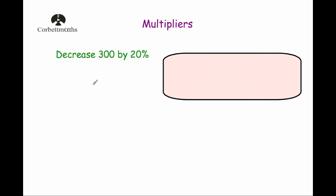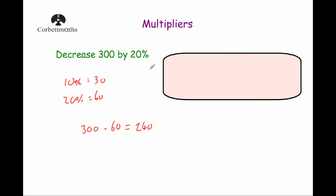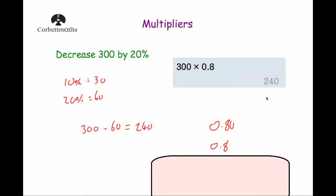Now we're going to look at decreasing by a percentage using a multiplier. Our question says decrease 300 by 20%. Using the standard method: 10% is 30, so 20% is 60, and 300 take away 60 equals 240. But with a multiplier — if we have 100% and decrease by 20%, that leaves us with 80%, which as a decimal is 0.8. So multiplying 300 by 0.8 gives us 240 straight away.